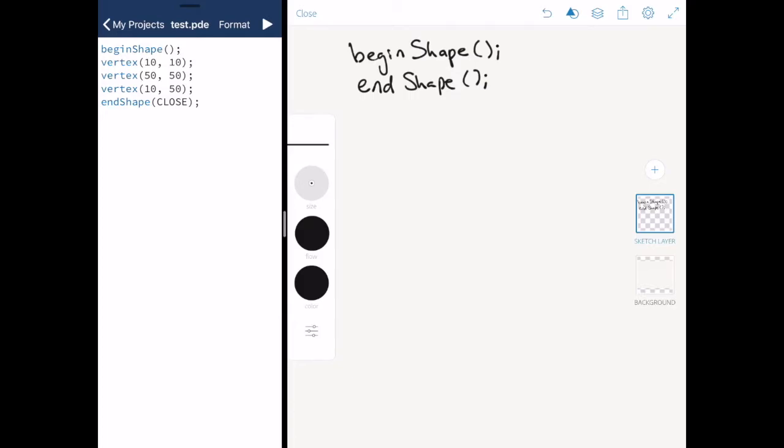Hi I'm Phil and today we're going to have a quick look at beginShape and endShape. beginShape and endShape is like telling Processing how to draw a line by telling it where to put the pencil down and where to move it to.